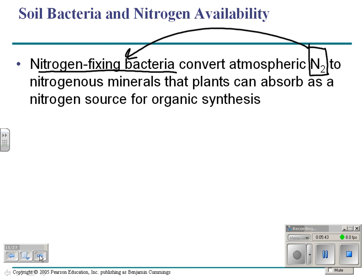Nitrogen has to be changed to nitrogenous minerals — nitrate and ammonium — that plants can then absorb as a nitrogen source.